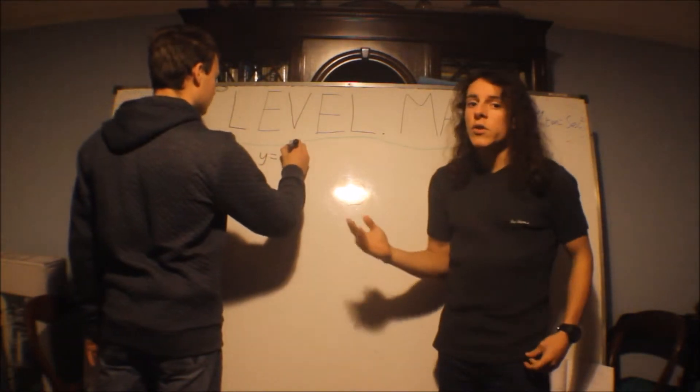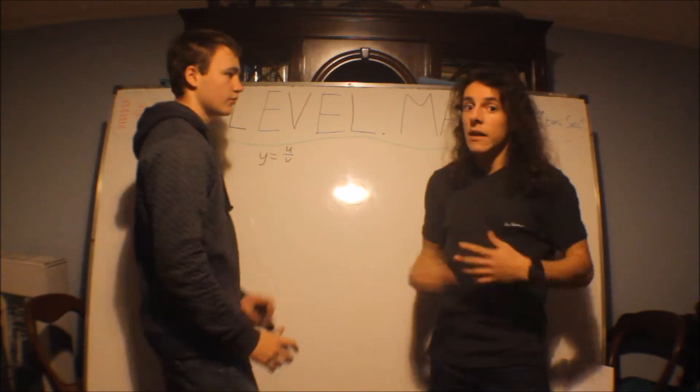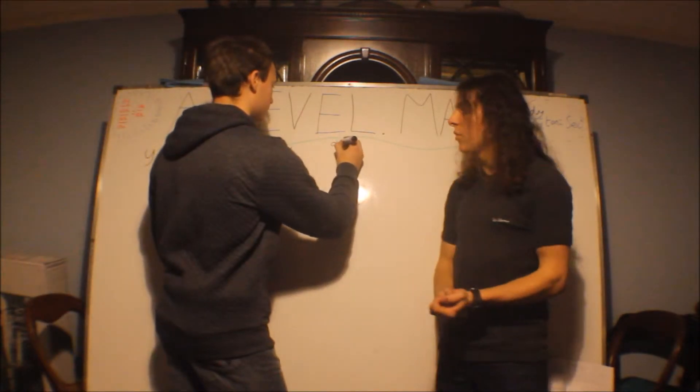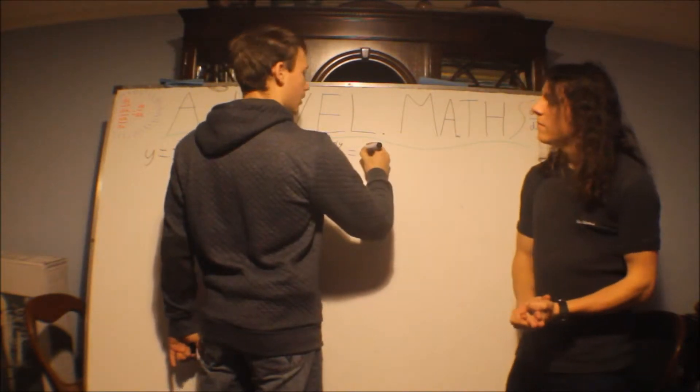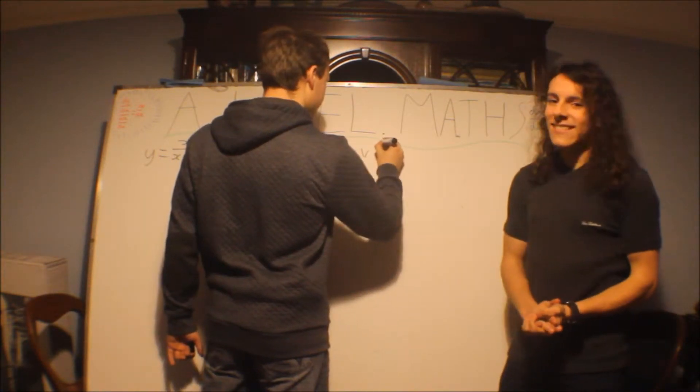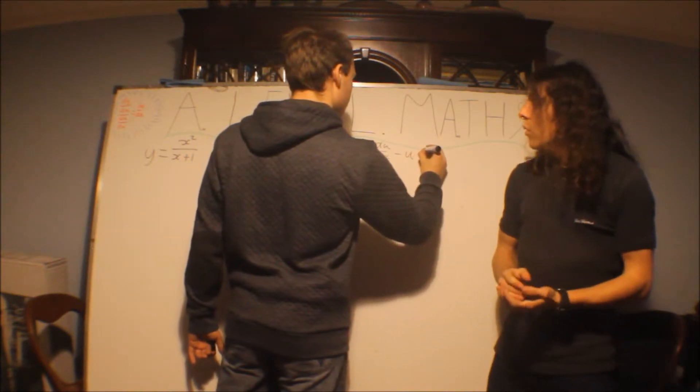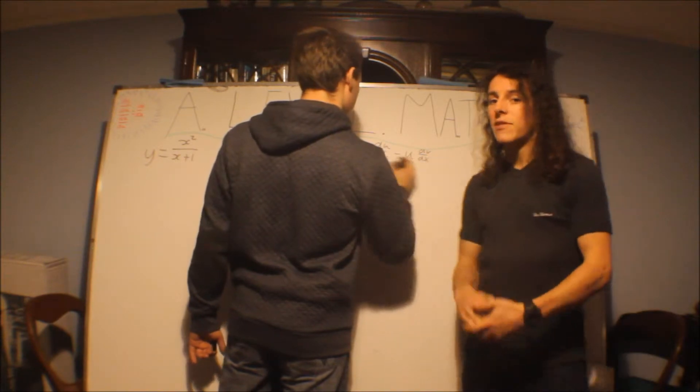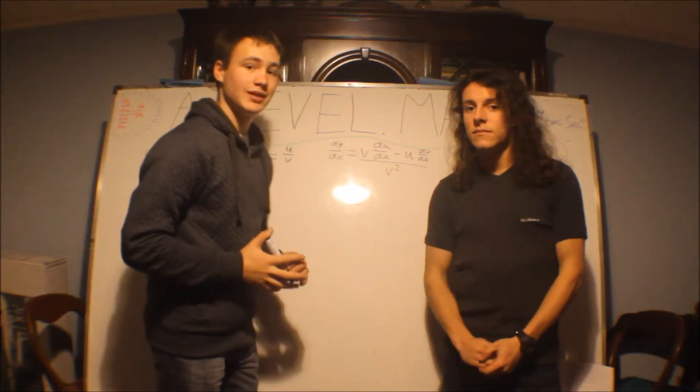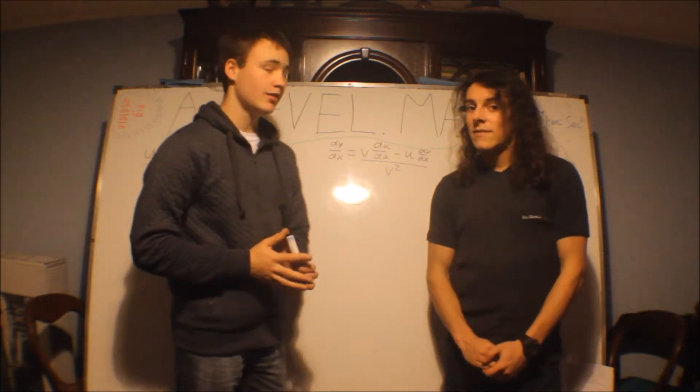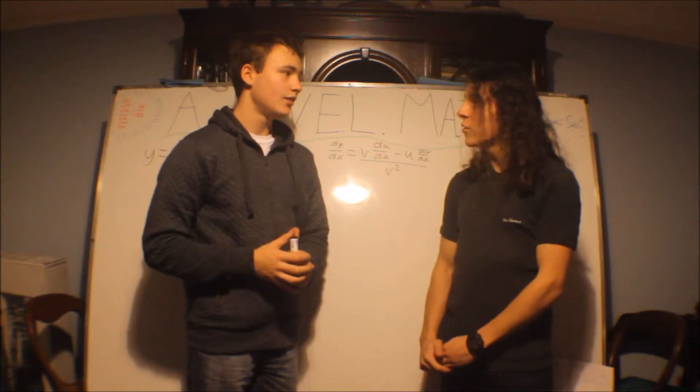So the quotient rule is used when it's u over v, and this matters what order they're in. So again, we have the equation, it's a bit bigger than the previous one. dy/dx equals v du by dx take away u dv by dx all over v squared. That's almost as big as the first time I memorized minus b plus or minus b squared minus 4ac all over 2a. It does feel like that, it's grown so much.